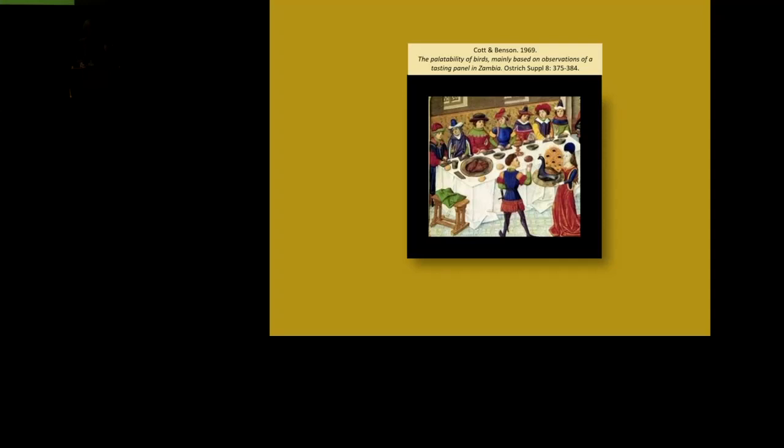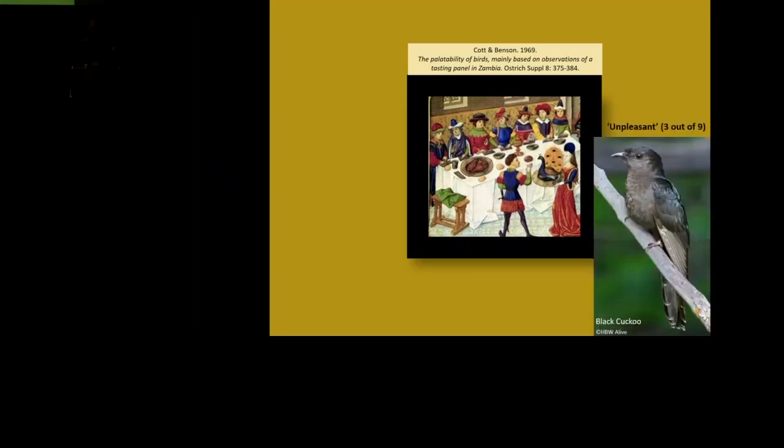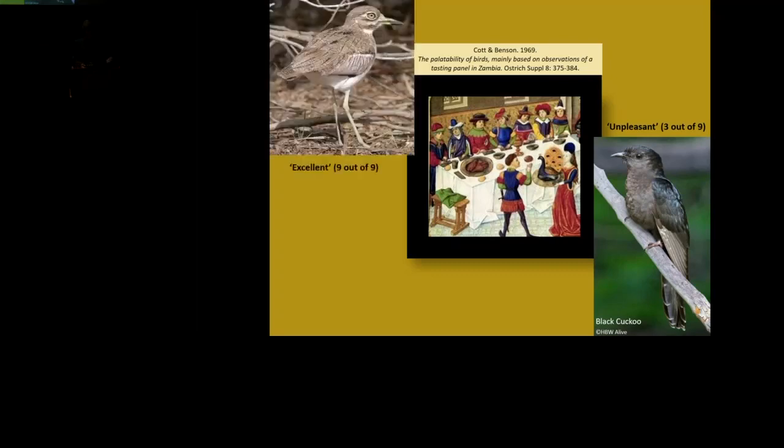Benson put together all that information, together with his own views as a field ornithologist, on how conspicuous the birds were in terms of either color or behavior. And he found a very strong inverse relationship between cryptic birds were the most tasty, conspicuous birds were the least tasty. And if you wonder which was which, the least tasty, the bottom score is actually two rather than nought. Very unpleasant, the black cuckoo. So it's not terribly colorful, but very conspicuous. And the tastiest of all, the water thick-knee. Excellent.